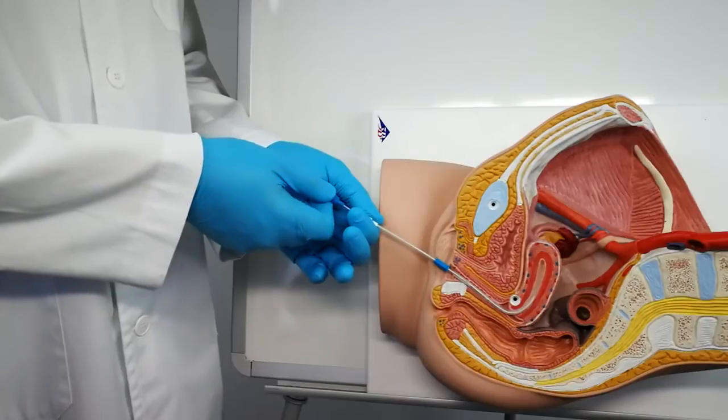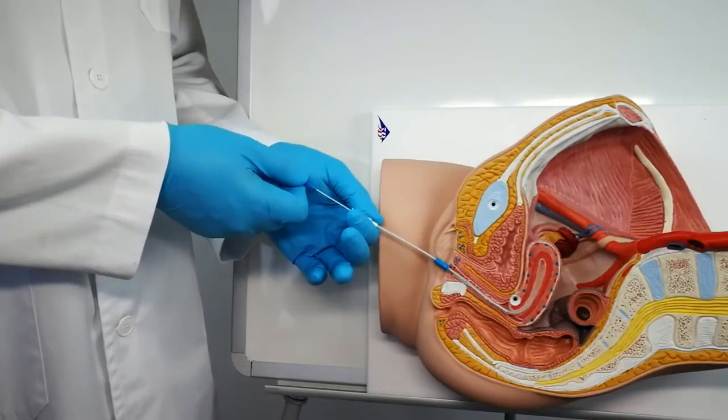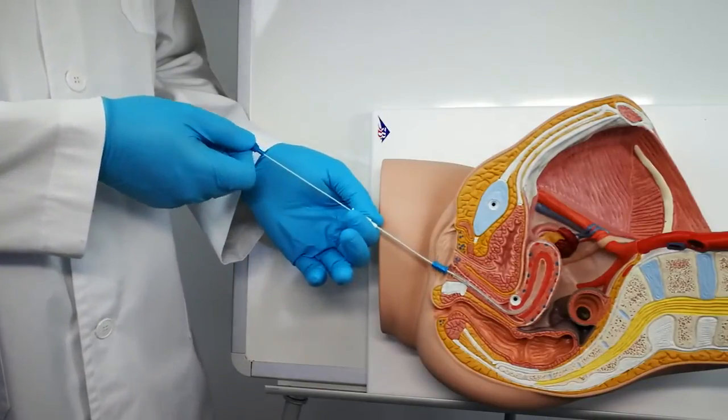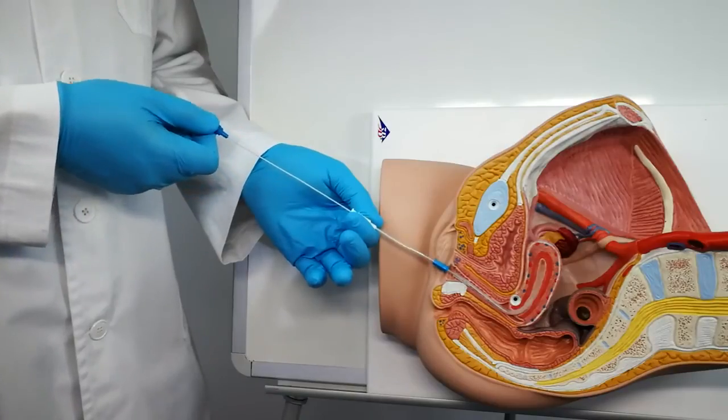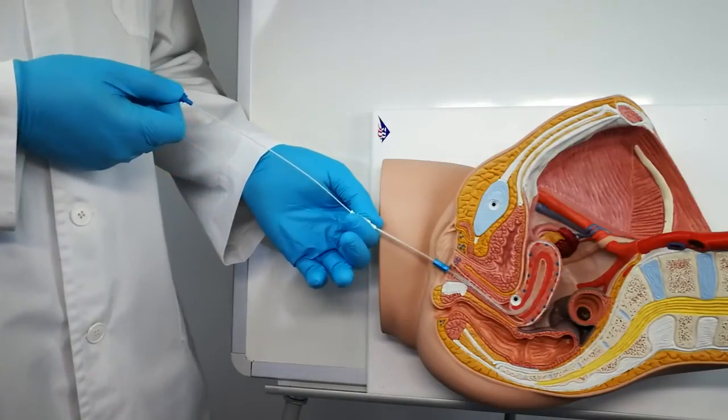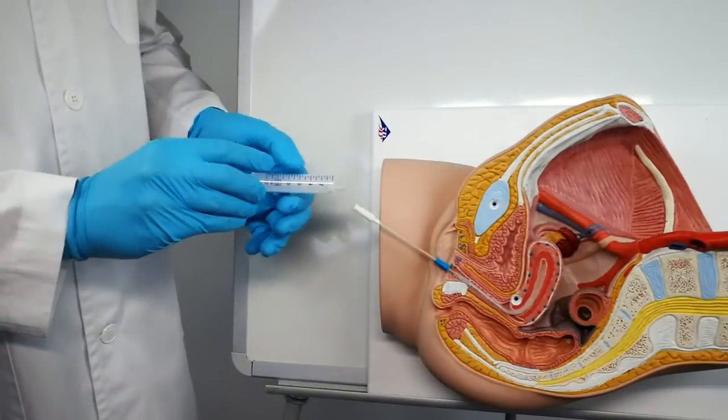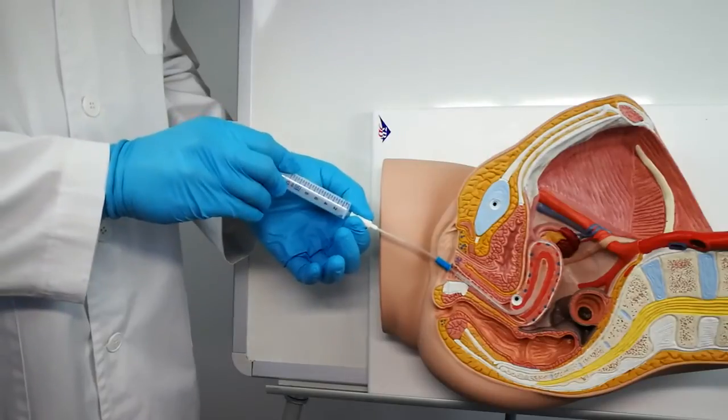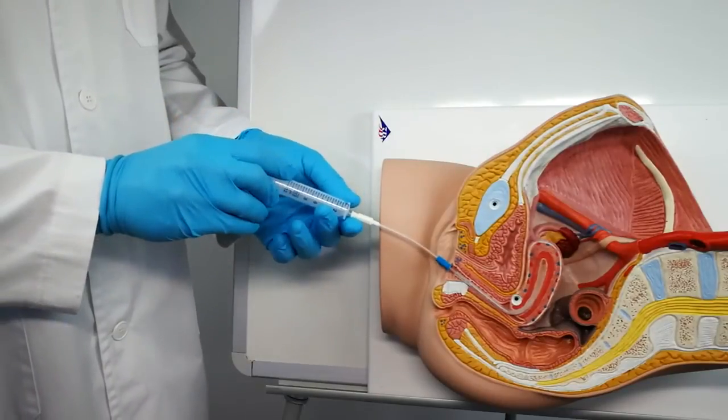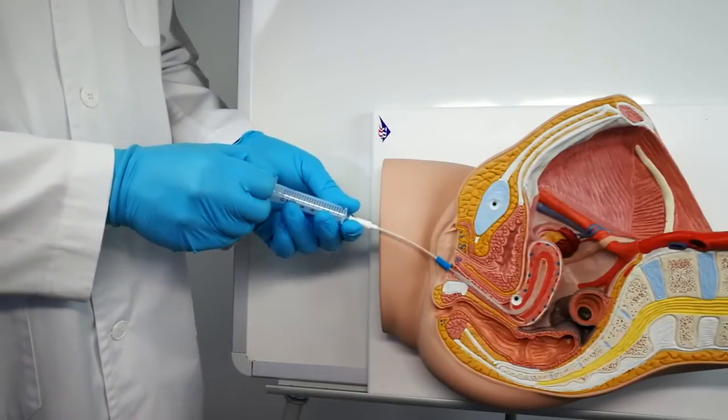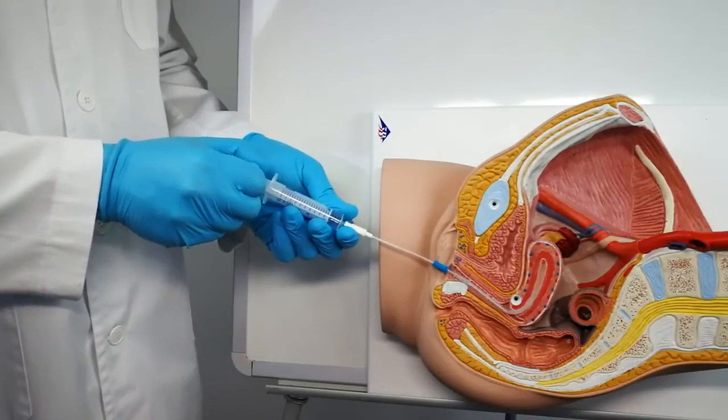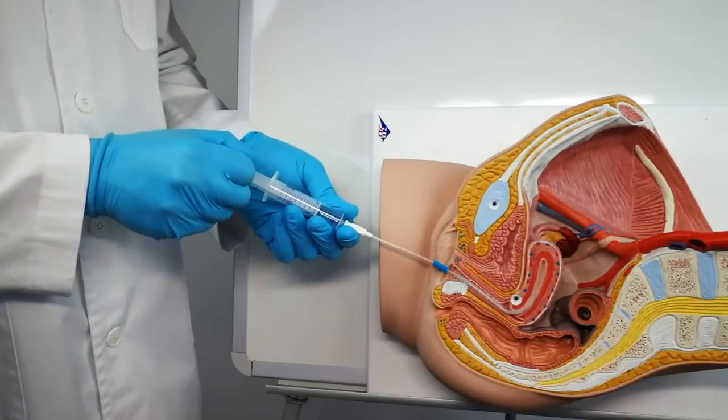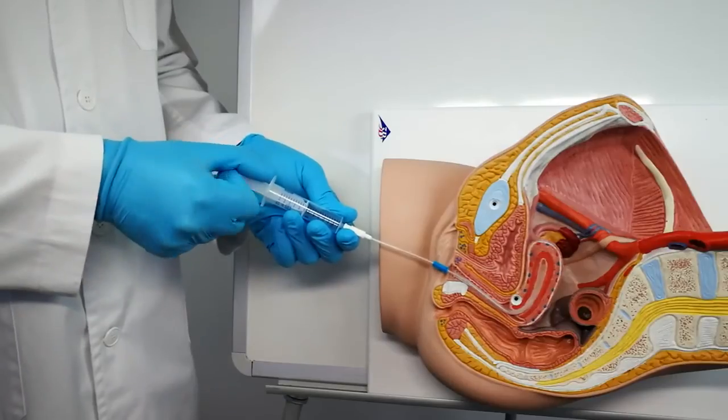Once the catheter is introduced inside the uterine cavity, remove the mandrel or guide. Hold the catheter in a fixed position and connect a 10 ml syringe to start the aspiration by carefully actioning the plunger 3-4 times. It is normal to feel negative pressure when actioning the plunger and that the plunger comes forward when aspiring.